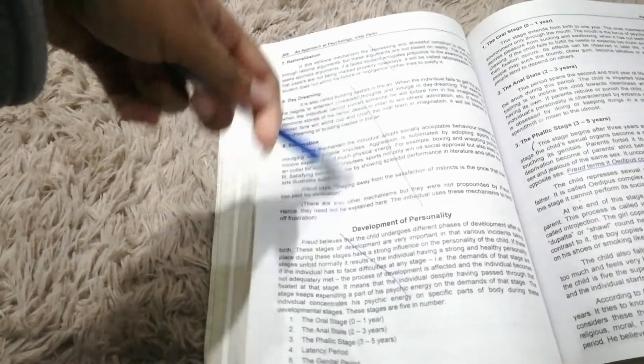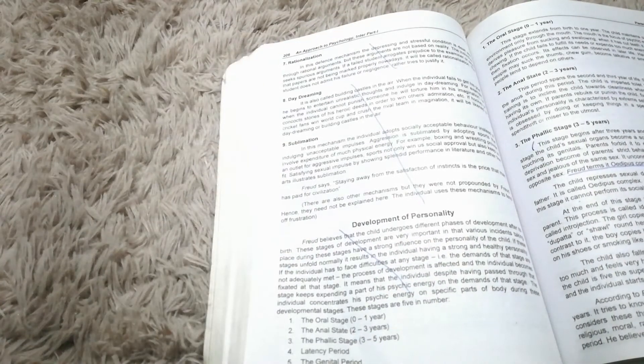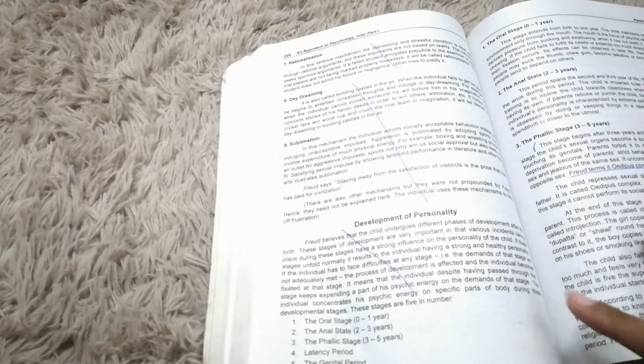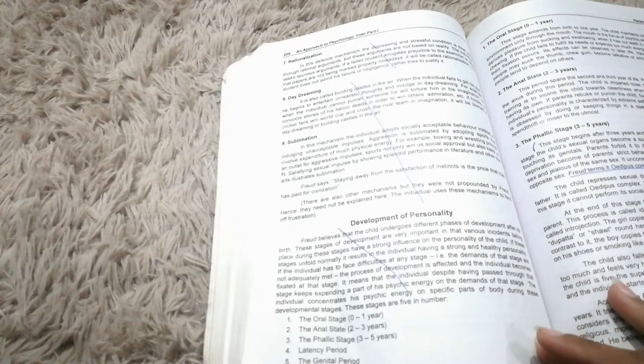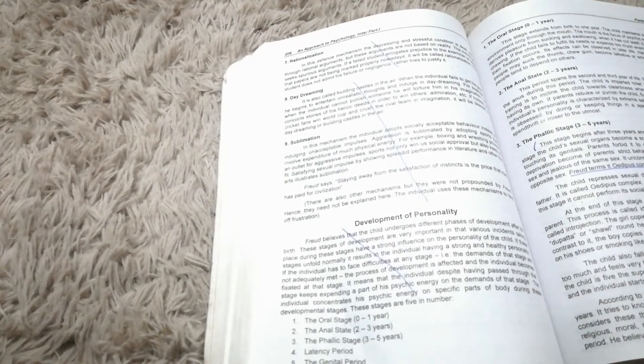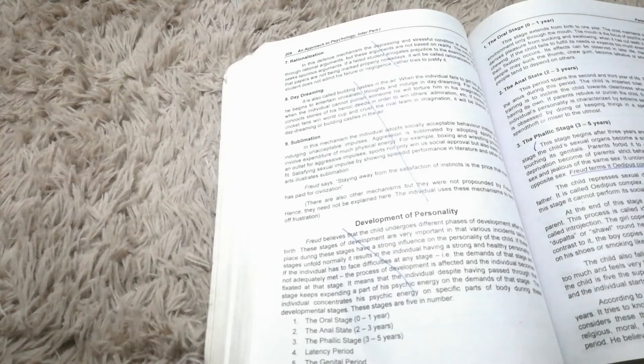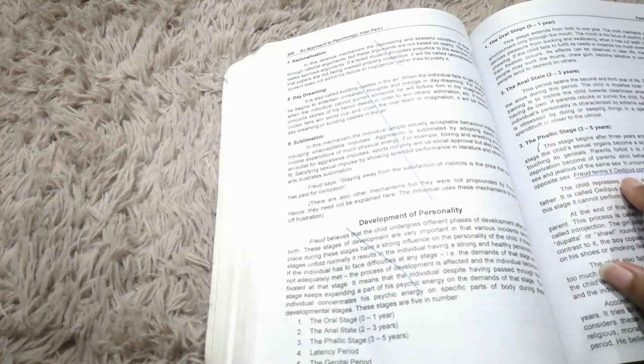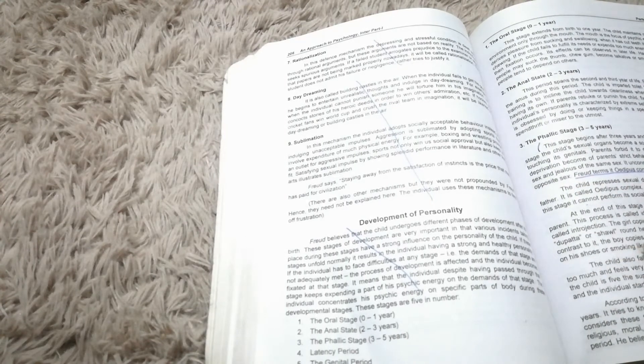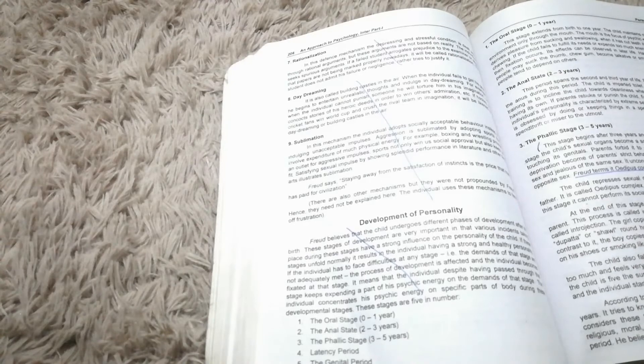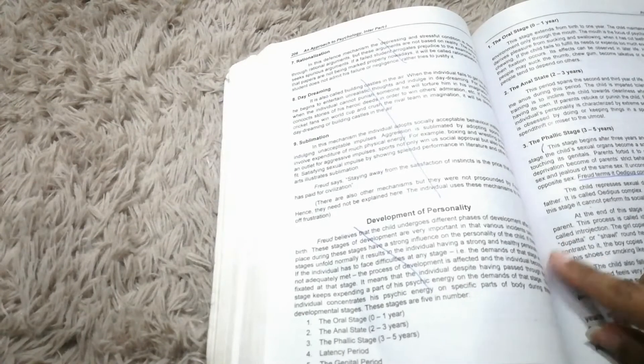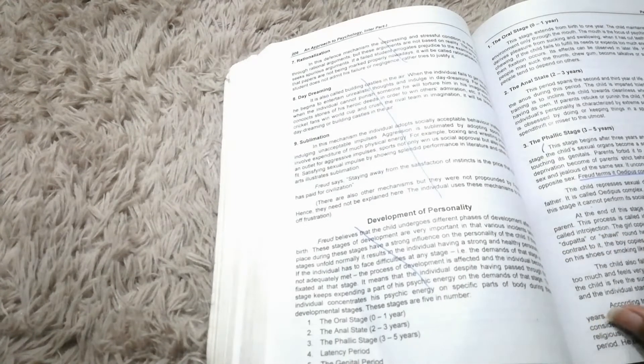This is part of development of personality. Development of personality. One time read all. This is Stages and This is Freud term. Oedipus Complex and Electra Complex in Girls. This is MCQ line important. Then there is something also. Latency Period.